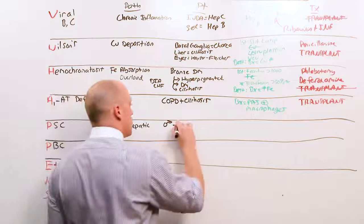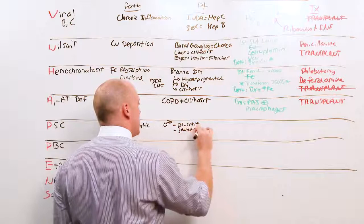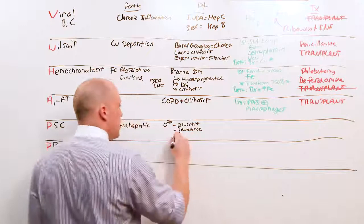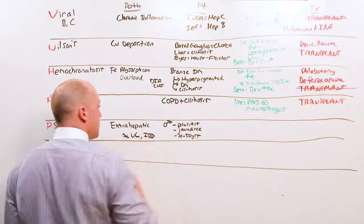They're going to present with pruritus, jaundice, a painless jaundice to differentiate it from gallstone disease, and they'll be 30 to 50 years old. One question they like to ask is its association with ulcerative colitis or inflammatory bowel disease in general.